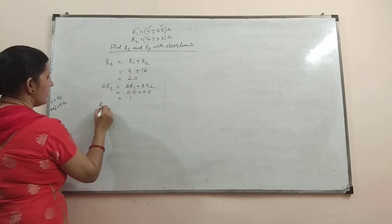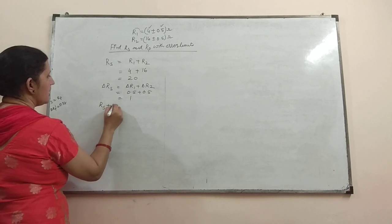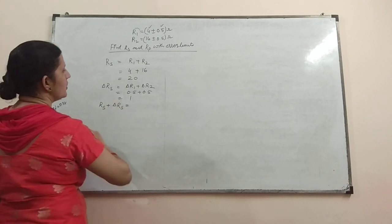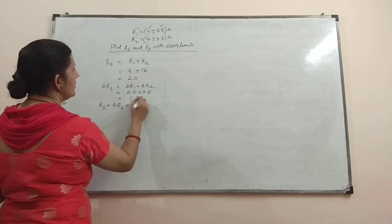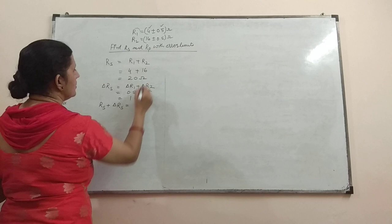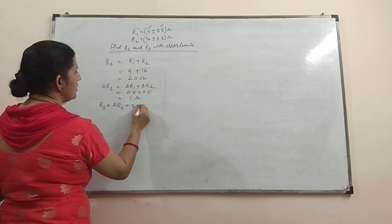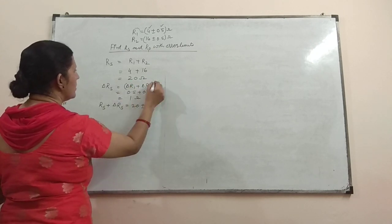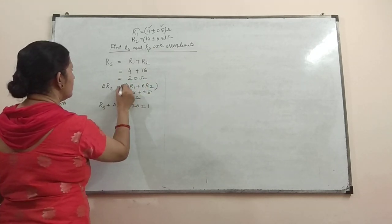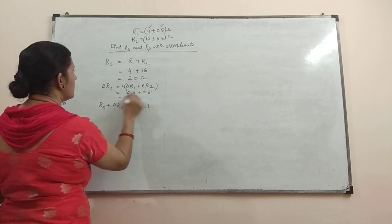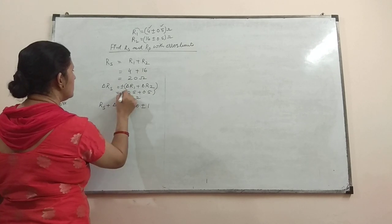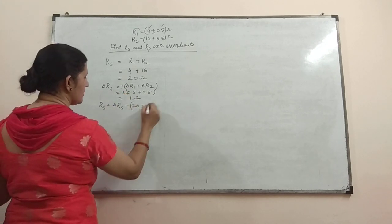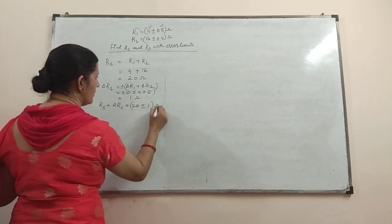So you can write it as RS plus minus delta RS is equal to 20 plus minus 1 ohm. You can have plus minus — plus minus gives you the range, plus minus 1 ohm.